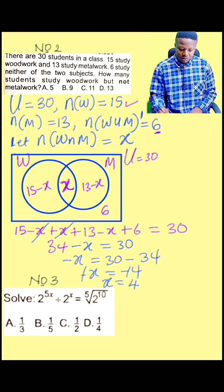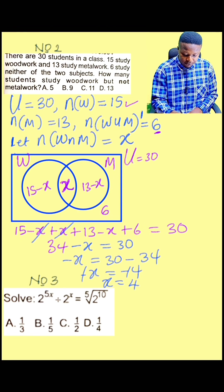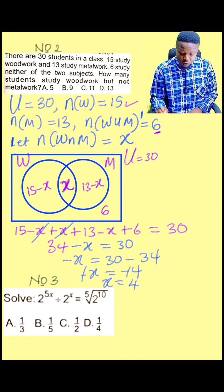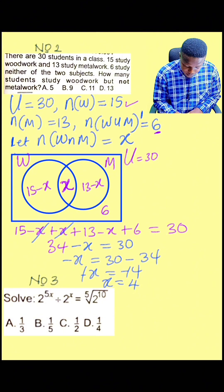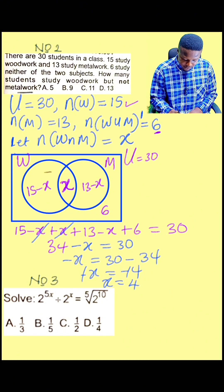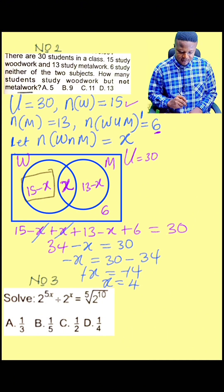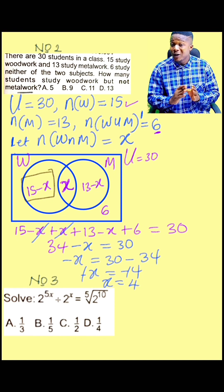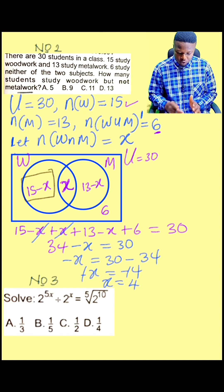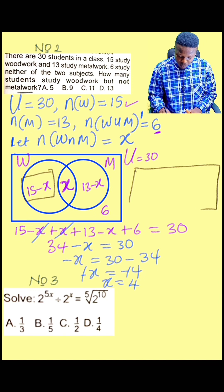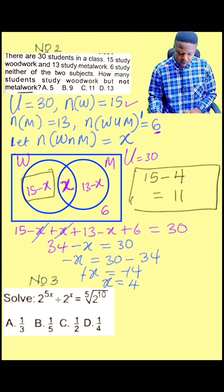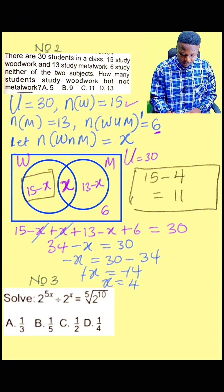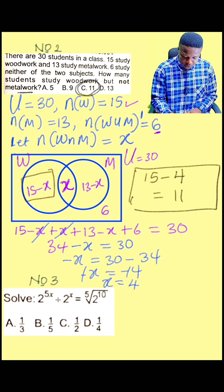So the value of X is 4. But mind you, we are not looking for X. The question does not want us to get X. It says, how many like woodwork but not metal work? Woodwork is 15 minus X. They want people that are just in woodwork, no attachment with metal work. So this number of students that we need is 15 minus X. And already our X is 4, so 15 minus 4 is equivalent to 11. Therefore, 11 is the correct option, Option C.